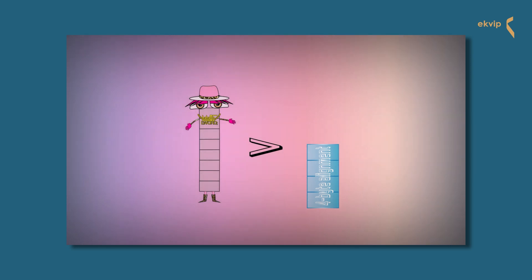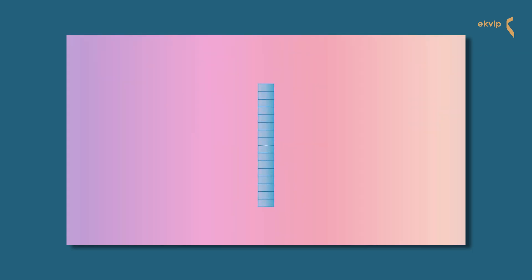These alignment rules may result in implicit padding bytes. This means it can make a difference how you place your variables in a structure. If BaboG is first, followed by BaboG, and at the end BaboBy, the structure has a size of 16 bytes.